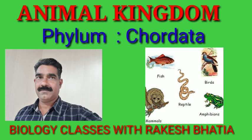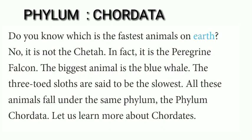So let us start with Phylum Chordata. Do you know which is the fastest animal on earth? It is not the cheetah. In fact, it is the peregrine falcon — a duck-hawk. The biggest animal is the blue whale. The three-toed sloths are said to be the slowest animal. All these animals fall under the same phylum — the Phylum Chordata. Let us learn more about Chordata.